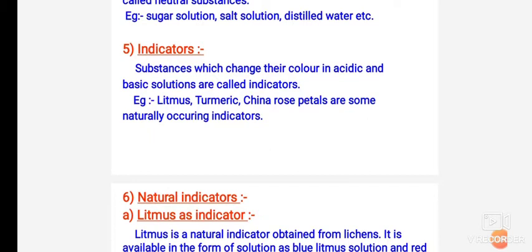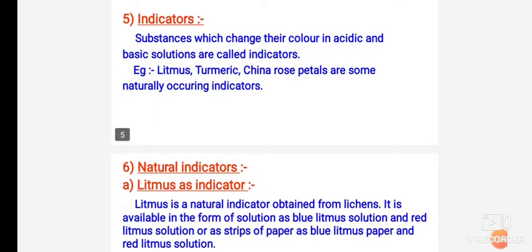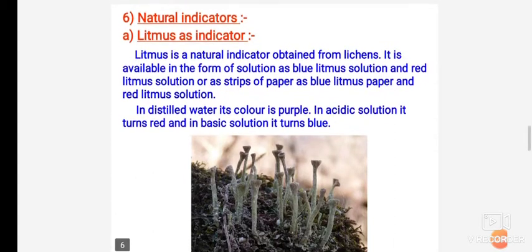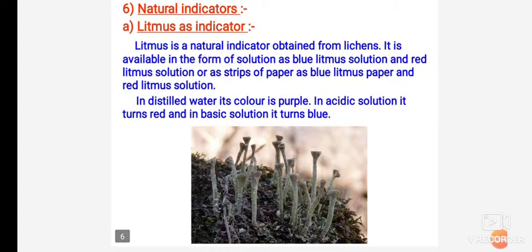We had already discussed some natural indicators like litmus, turmeric, and china rose. The first natural indicator is litmus. Litmus is a natural indicator which is obtained from lichen. You can see the picture of the lichen and draw it in your copy. In acidic solution it turns red and in basic solution it turns blue.